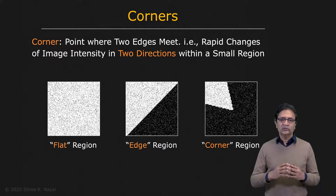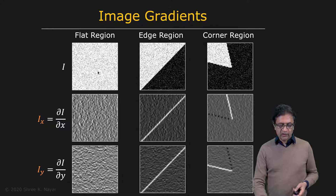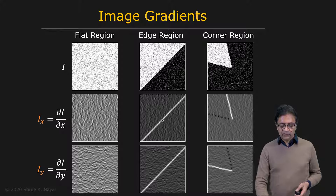As in the case of edge detection, we are going to use the derivatives of the image to actually perform corner detection. We're going to find the derivative of the image with respect to the x direction — that's Ix — and the derivative with respect to the y direction, Iy. And these are the results you see for the three regions.